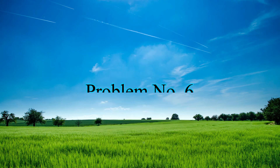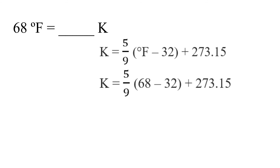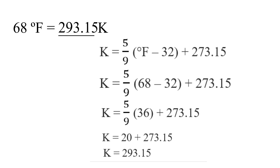To check our answer, let us reverse the process. Given 68 degrees Fahrenheit, we convert it to Kelvin using the formula: Kelvin equals 5 over 9 times the difference between degrees Fahrenheit and 32, plus 273.15. Plugging in the value: 5 over 9 times the difference between 68 and 32, plus 273.15. Subtracting: 68 minus 32 equals 36. Multiply 36 by 5 then divide by 9 gives 20. Adding 20 plus 273.15 equals 293.15. Our answer is confirmed correct.